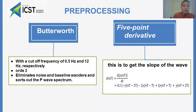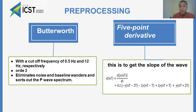Preprocessing: We use a Butterworth filter and a five-point derivative function. With the Butterworth filter, we eliminate noise and baseline wander. The result of the five-point derivative gives us the slope of the wave.